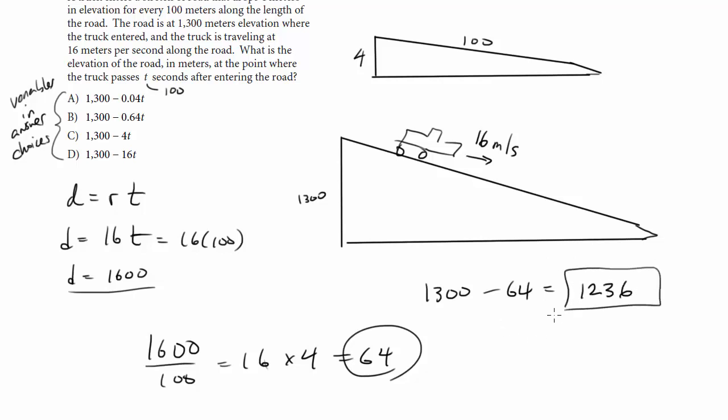So this should be my answer and now I go to the choices. So plug in 100 for t, this is going to be 1300 minus 4 doesn't work, this is 1300 minus 64 which is exactly what we want that looks good, 1300 minus 400 too big, 1300 minus 1600 that's negative so our answer here is b so that's plugging in.